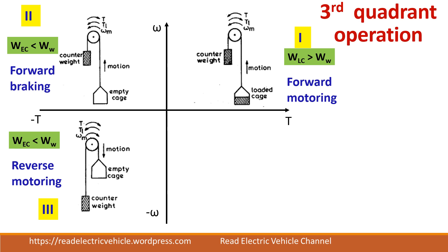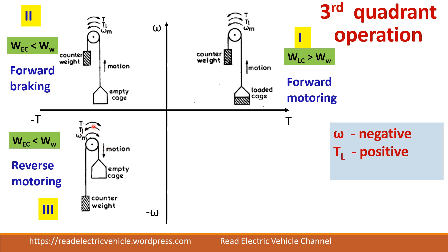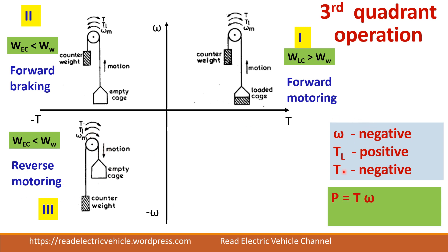In the third quadrant, we move the empty cage downward — bringing it from the top down. The counterweight is heavier than the empty cage, so the load torque acts in the positive direction. Speed is negative (downward). The motor torque must also be in the negative direction to bring the empty cage down. Both speed and torque are negative, so negative times negative gives positive power — this is reverse motoring operation.